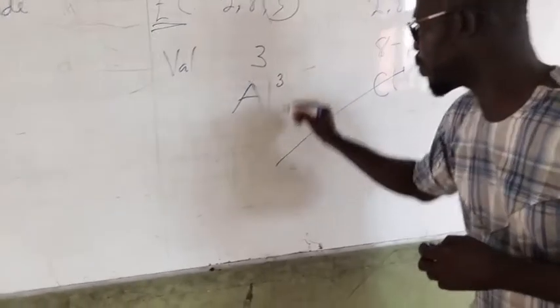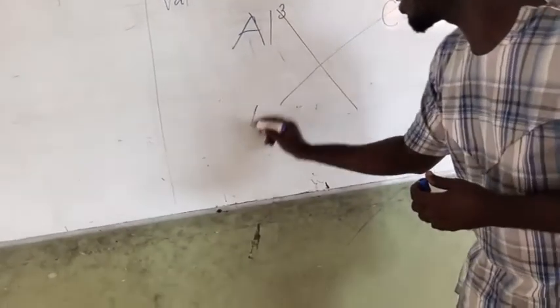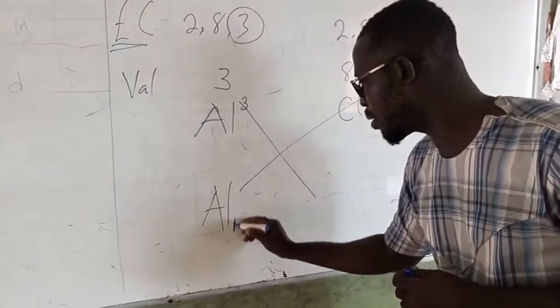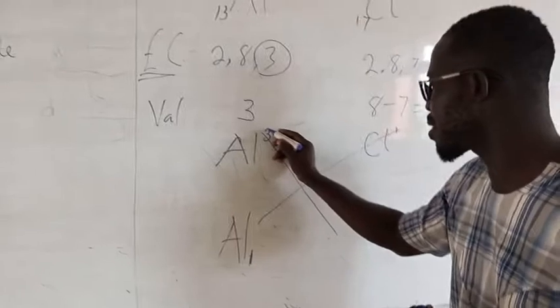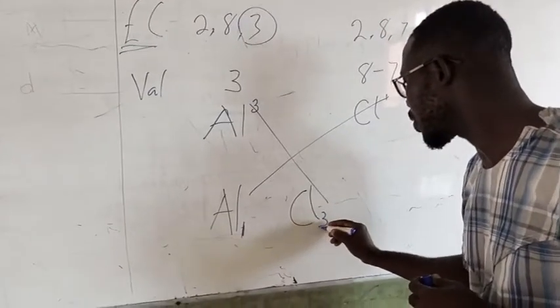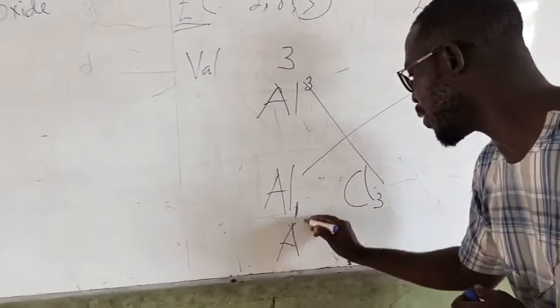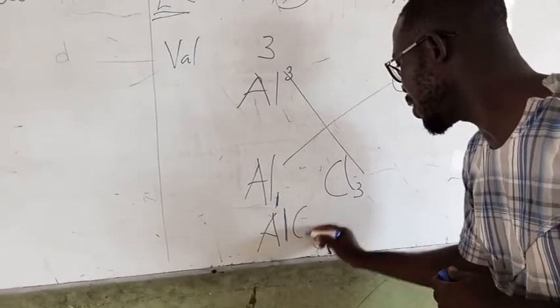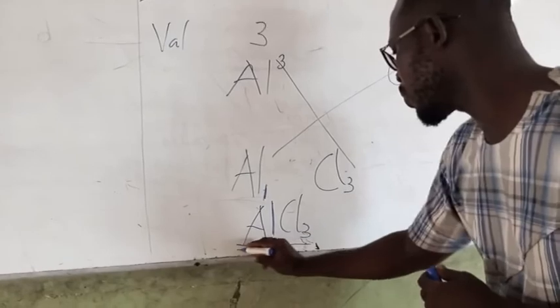Then you cross multiply, or you just cross it. So aluminum here, the 1 here comes down to aluminum. And then the 3 here comes down to chlorine. So we are writing it well. Now we have Al, the valency is 1, Cl3. Aluminum chloride.